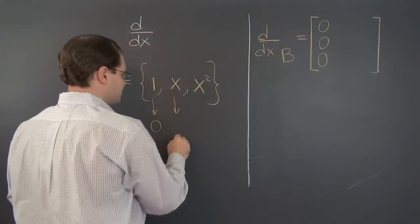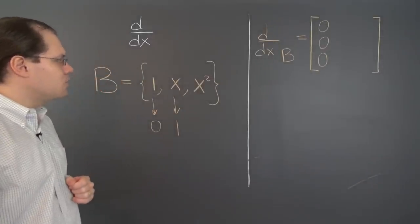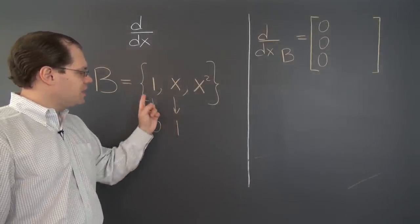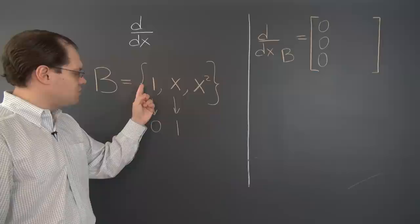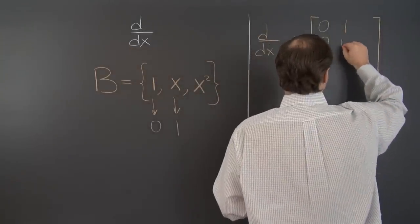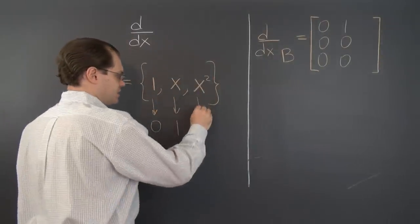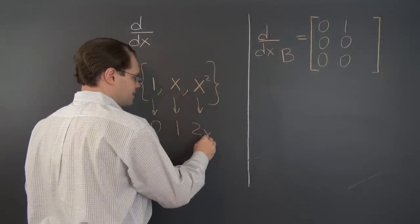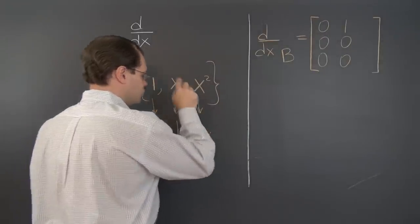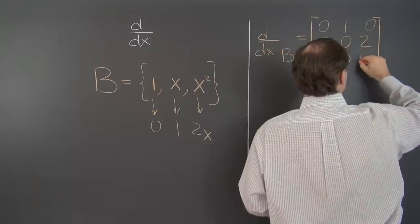For the second column, transform the second element of the basis, and of course it's the constant polynomial one. And decomposing one with respect to the same basis gives us coefficients one, zero, zero. And moving on to the last one, x squared, of course becomes 2x. So it's zero, two, zero. And we're done with this task.